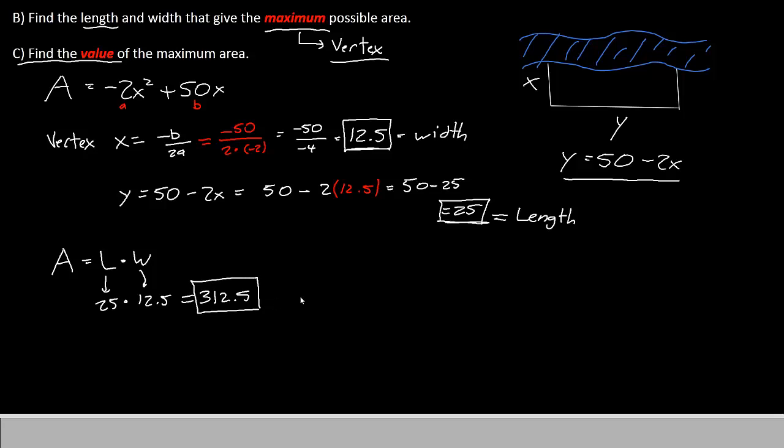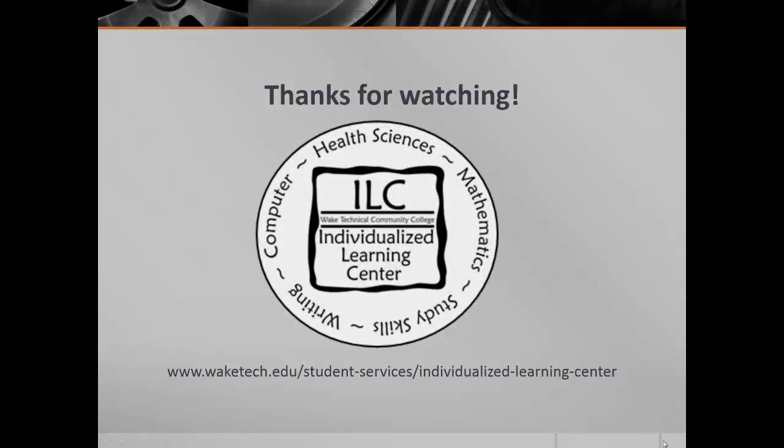So this is a good example of a problem you might be expected to solve with a second power polynomial. Not only writing the second power polynomial in terms of one variable, but also finding the maximum, and finding the dimensions of the shape that give it the maximum. Thanks for watching. We'll see you again next episode. Bye-bye.